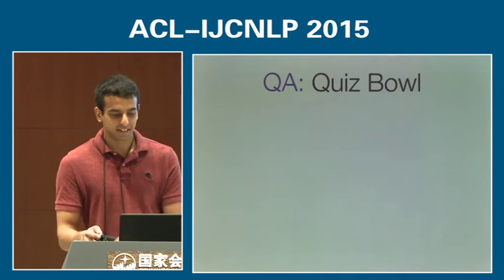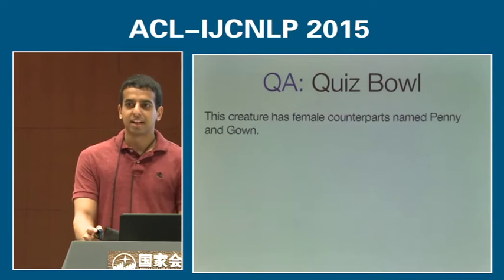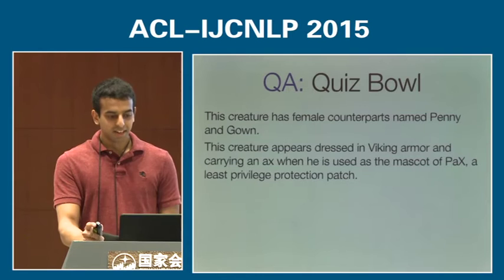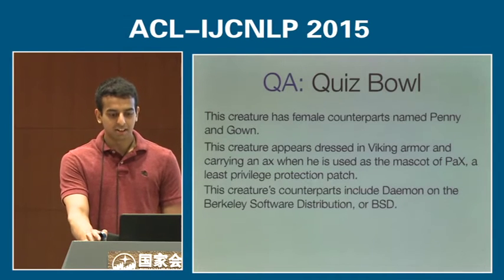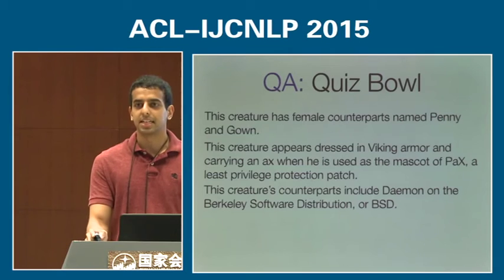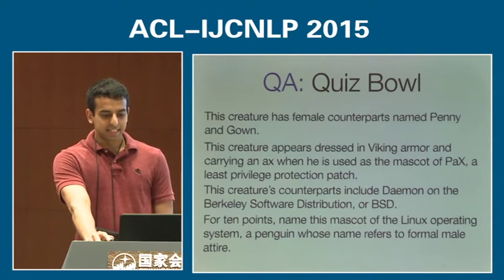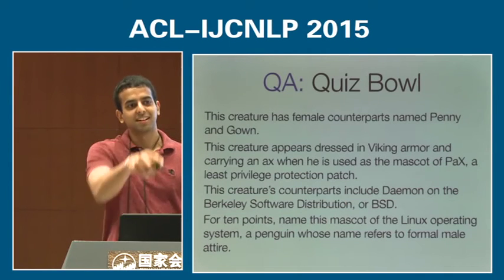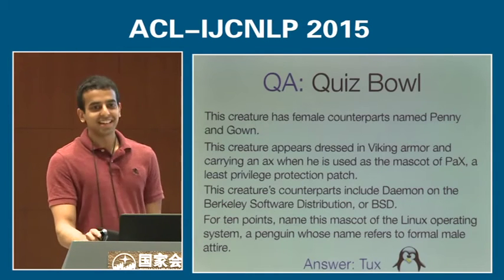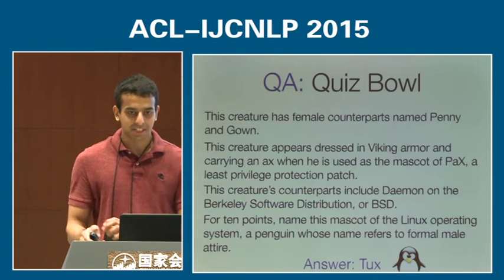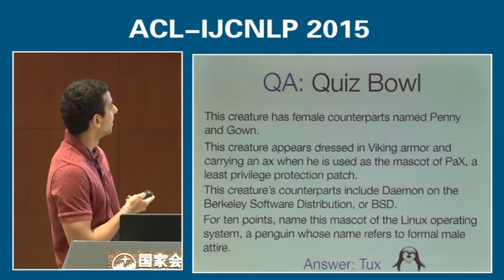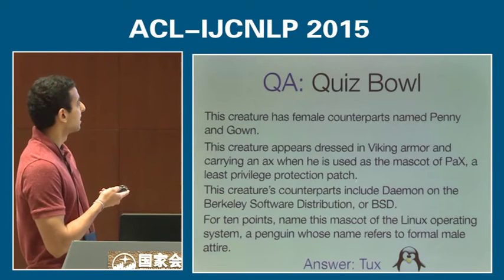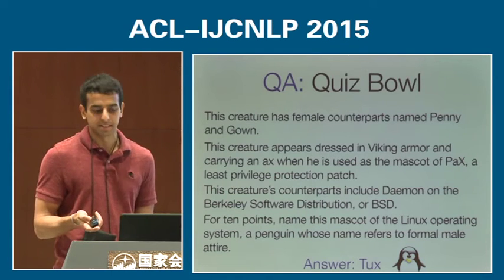This creature has female counterparts named Penny and Gown. This creature appears dressed in Viking armor carrying an axe when used as the mascot of PAX, a least privilege protection patch. This creature's counterparts include daemon on the Berkeley software distribution or BSD. For 10 points, name this mascot of the Linux operating system, a penguin whose name refers to formal male attire. You can see through this example that your goal is to answer the question after hearing as little text as possible — we're interested in particular at sentence positions one and two, which we define as early in the question.